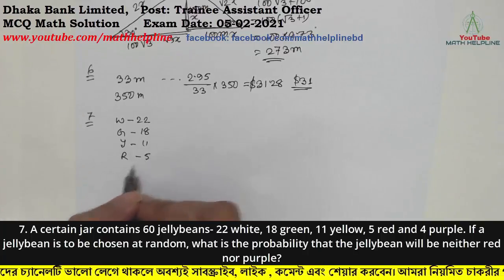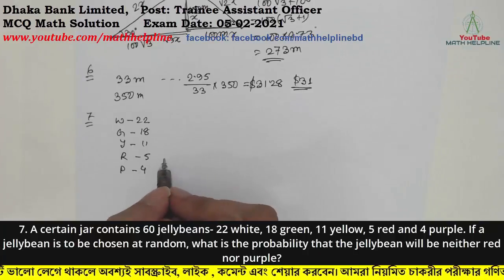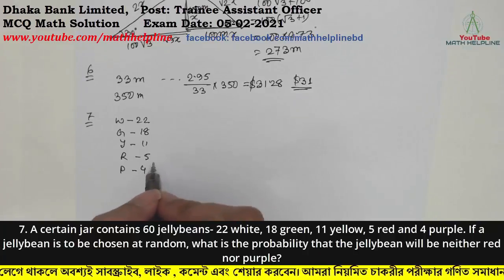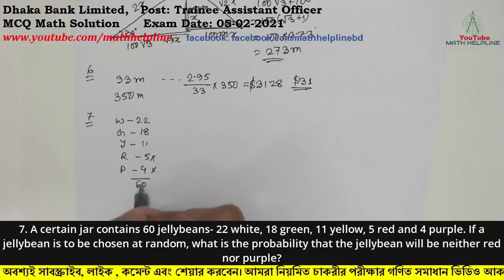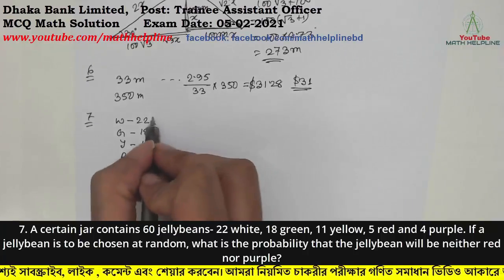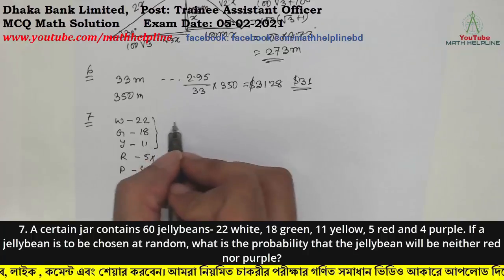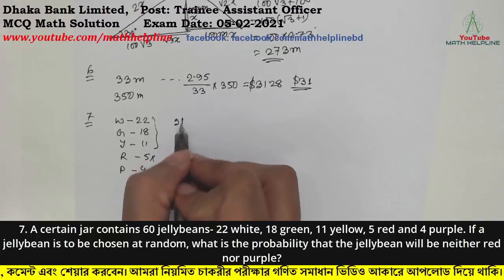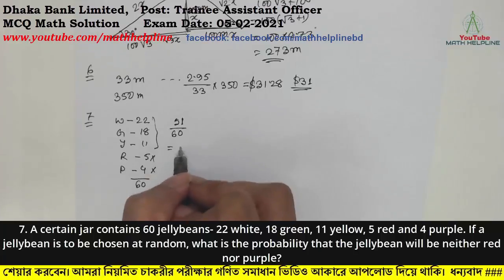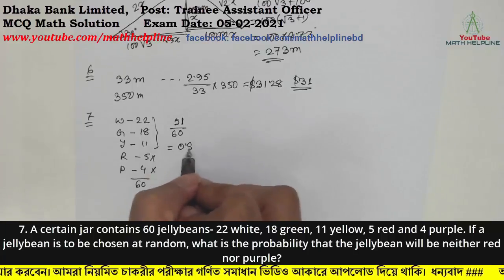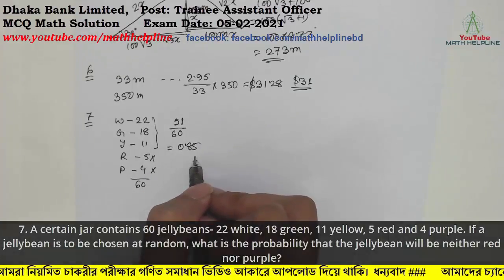Number 8: There are 4 purple balls. Red and purple together total 60. The remaining balls after removing red and purple is 51. So the probability is 51 out of 60, which equals 0.85, or 85%.